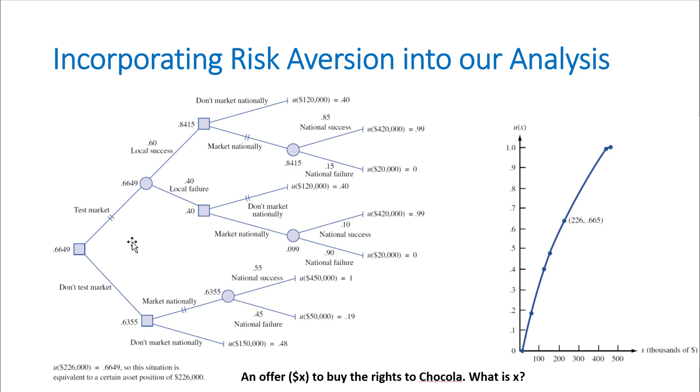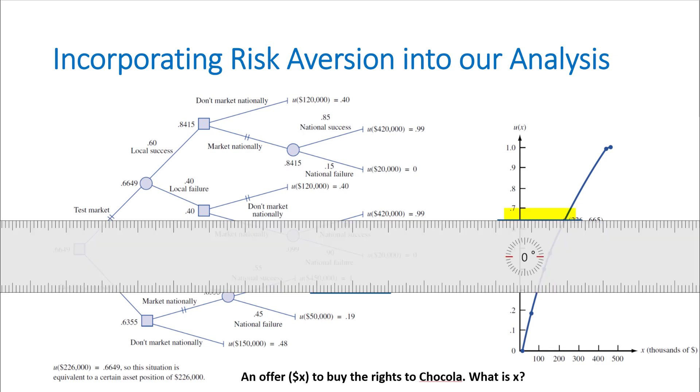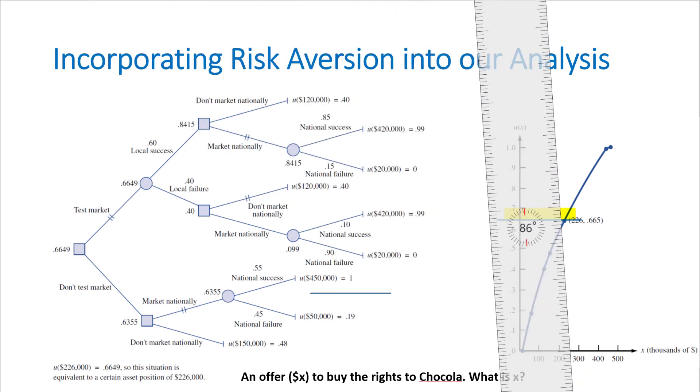So if another company approaches us and says, 'For how much money are you willing to just forget about marketing this product?' The utility of this whole decision tree is 0.6649, so I'm going to look at this utility function on the y-axis, find a point whose value is 0.6649, and then read the value on the x-axis.